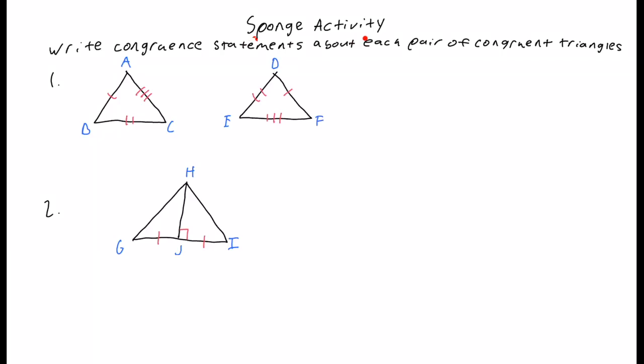Alright, now time for the sponge activity. I want you to write congruent statements about each pair of congruent triangles. On number one, we have this triangle and this triangle — I want you to state the congruent statement. And for these triangles here, again, write the congruent statement. That's it. Please make sure to take notes on the entire lesson, attempt the sponge, and make sure you put your rating — 3, 2, 1, 0. Take a picture of it, submit it all to your backpack, and have a good night.